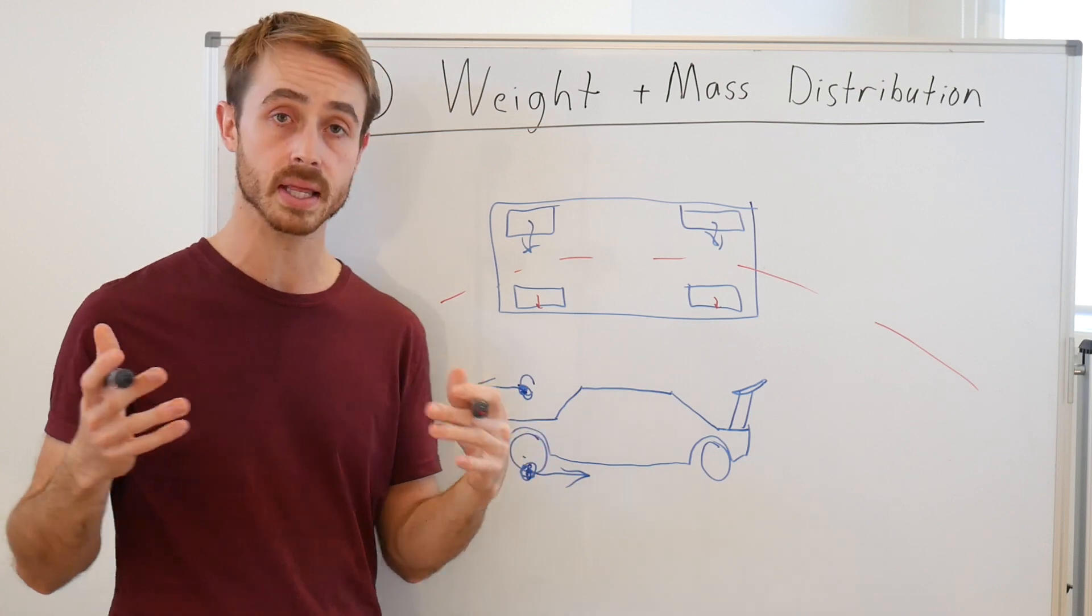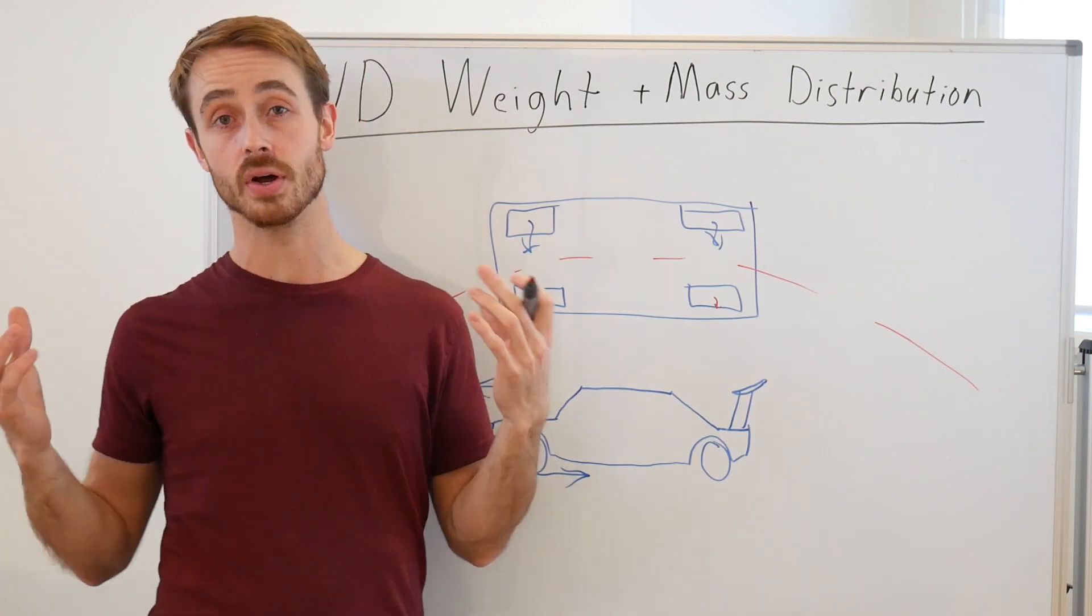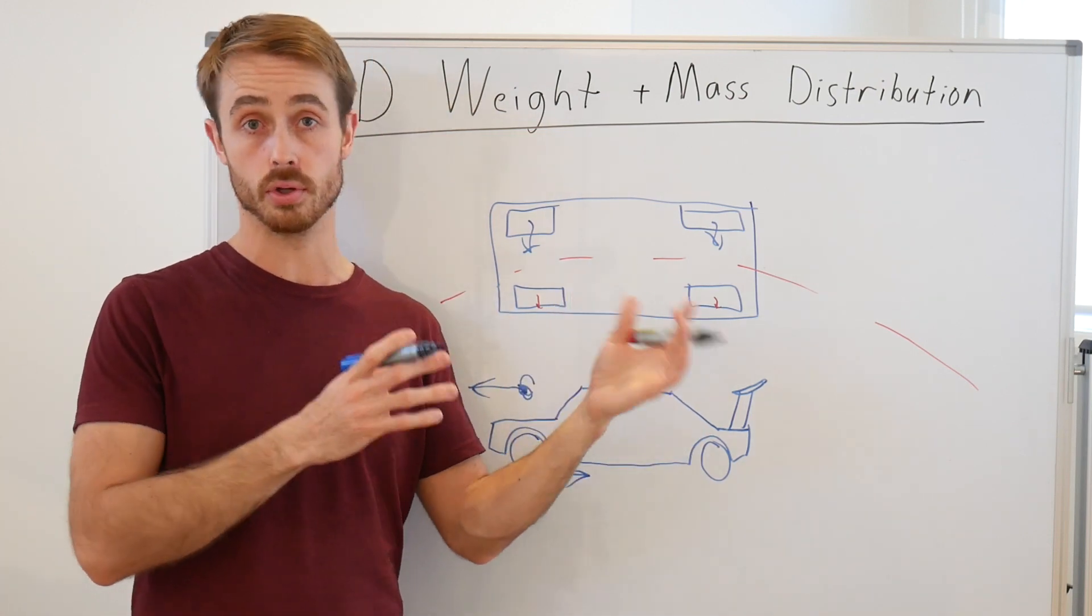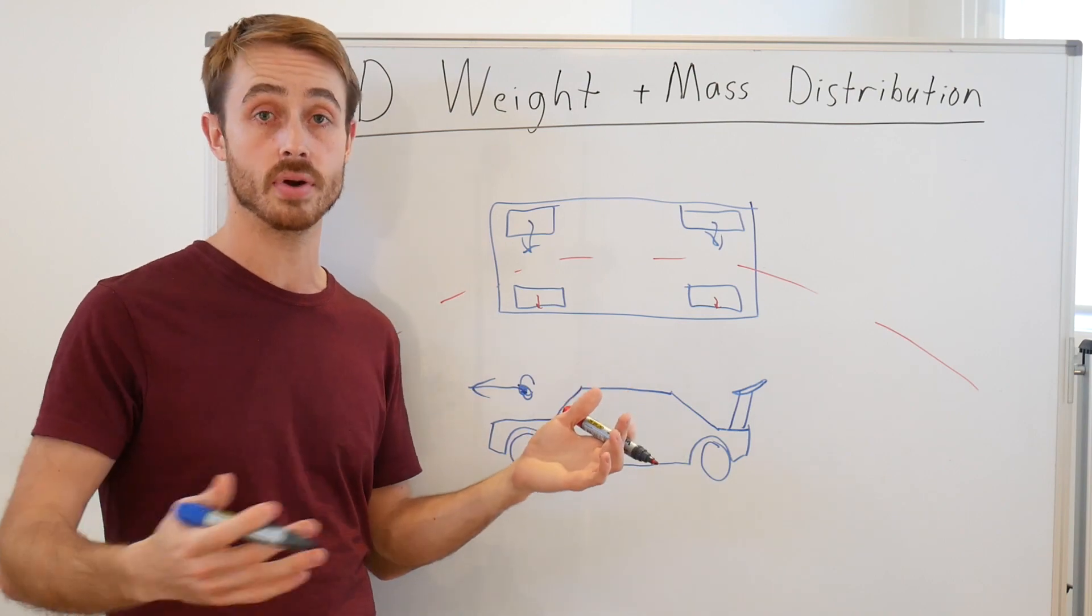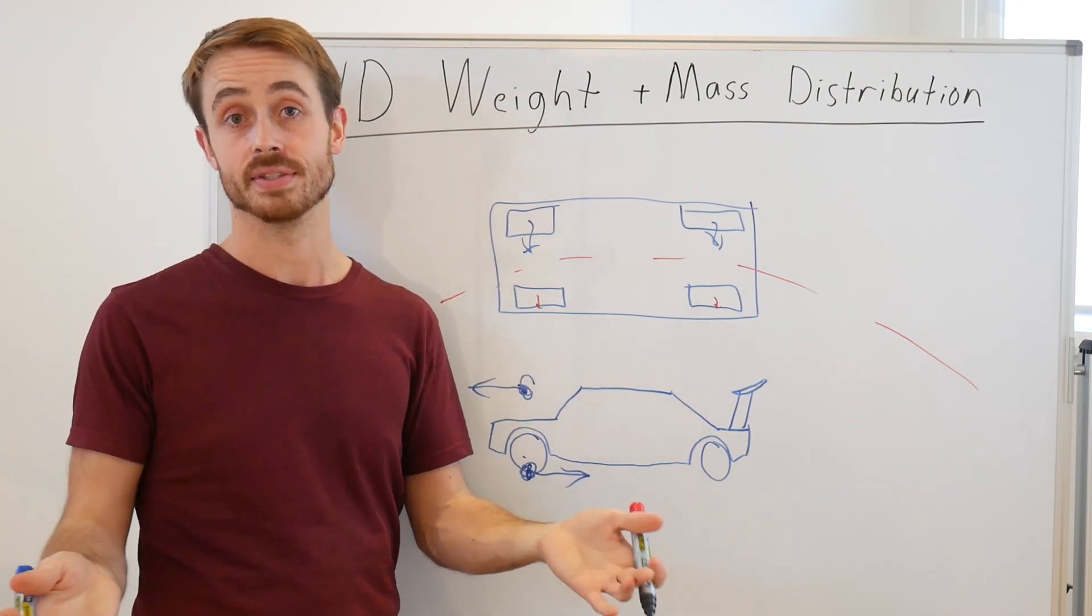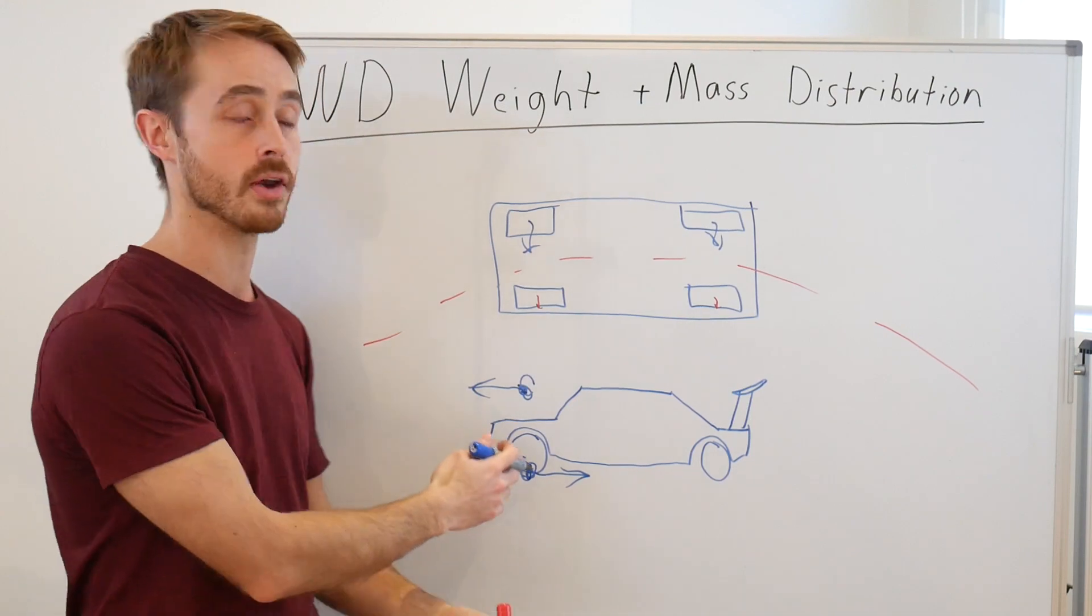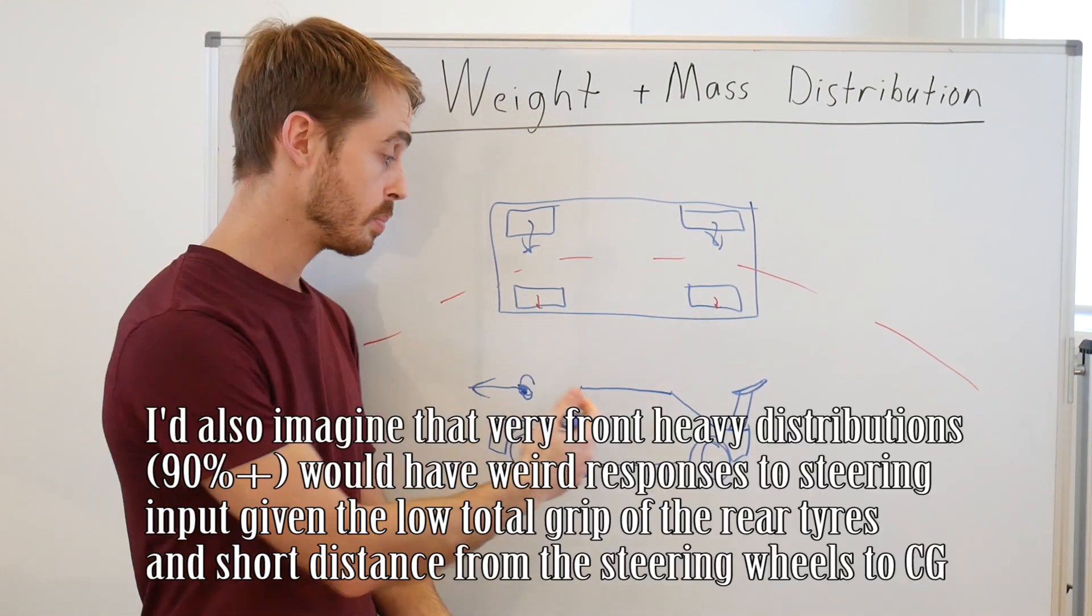So even something like a drag car, you can see that that's not ideal because if you don't have a chute to purely slow you down at the end of your drag strip, you're going to flip your car the second you stamp on the brake.